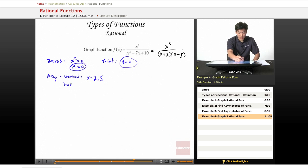If we look for the horizontal, once again, we have x squared over x squared, which means 2 over 2 equals 1. So we have a horizontal asymptote at y equals 1.